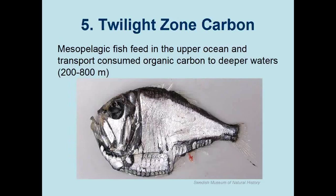Twilight zone carbon is a mechanism where fish living in deep waters undertake vertical migration at night to feed on zooplankton in surface waters, and then during daylight hours return to depth, bringing ingested organic matter with them. These fish live in the ocean's twilight zone at depths of 200 to 800 meters and undertake this migratory feeding behavior to avoid predation. When these fish return to deep waters, they transport organic carbon which is ultimately released as feces that may sink further. The deeper carbon sinks, the longer it can potentially stay out of the atmosphere — if it reaches the deep sea and sediment, it can be stored for thousands to millions of years.